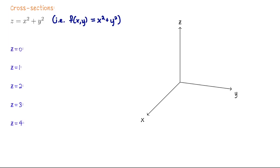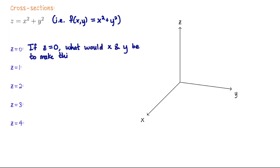What a cross section is: you take one of the values for the variables — we're going to take z cross sections for this example — and you say, suppose I set z equal to 0, what would x and y look like in order to make the equation true? If z equals 0, then we need x and y so that x squared plus y squared equals 0. There's no choice here — it has to be the origin. So I come over to the graph in xyz space and look in the plane z equals 0, which is the familiar xy-plane at the bottom.